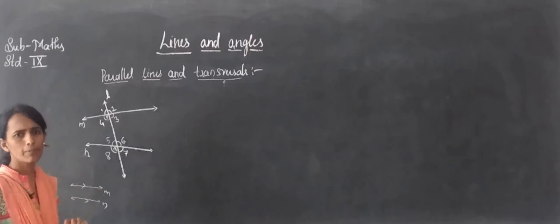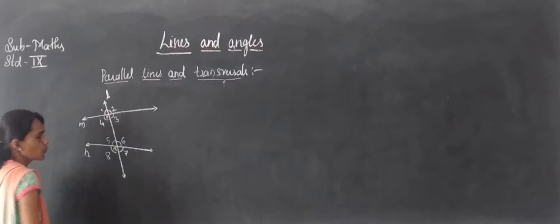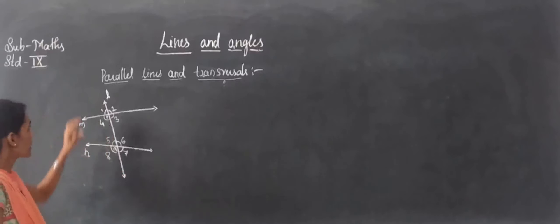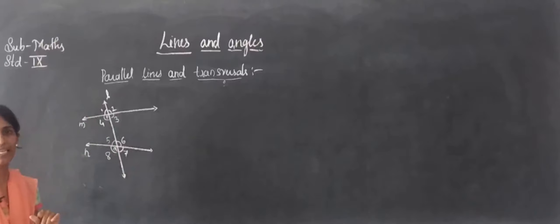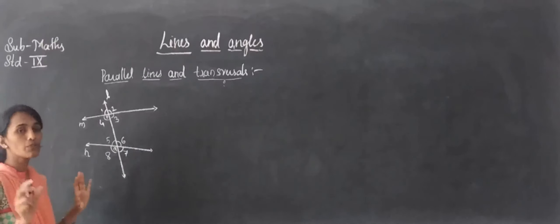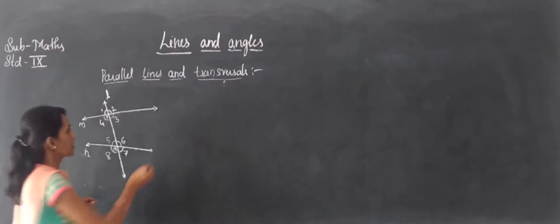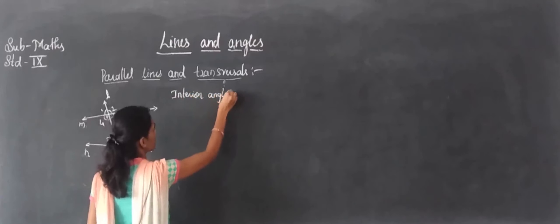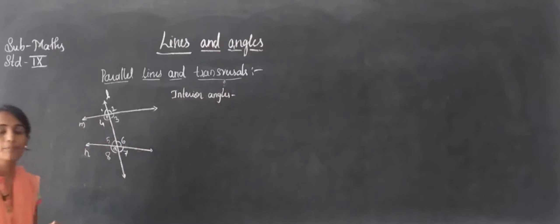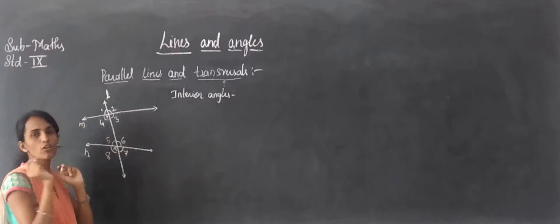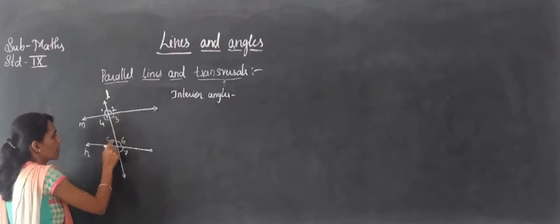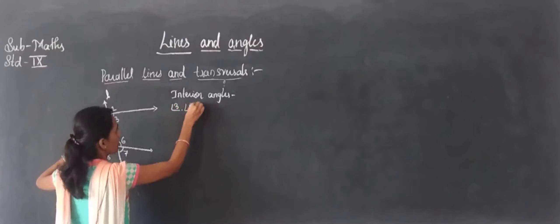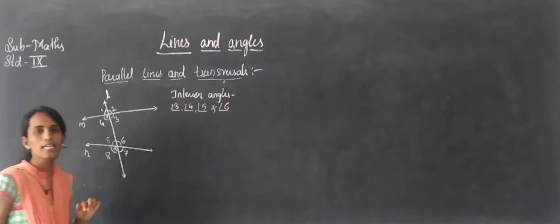When a transversal intersects two lines, many angles are formed. First we look at interior and exterior angles. Interior angles are the inside angles: angles 3, 4, 5, and 6 are called interior angles.